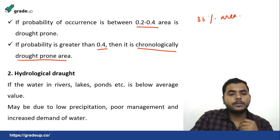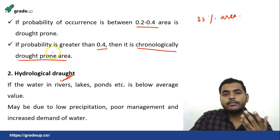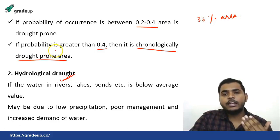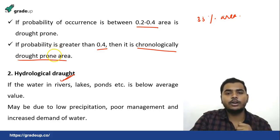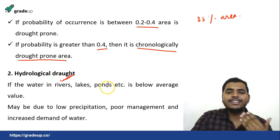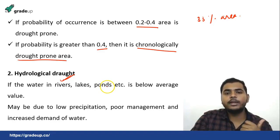The second type of drought is hydrological drought. It occurs when the water content in different water bodies like lakes, rivers, and ponds goes below the average value. It may be due to low precipitation, low rainfall, poor management of these water bodies, or a very increased demand for water due to a steep rise in population. So overpopulation also has a great role to play in drought conditions.